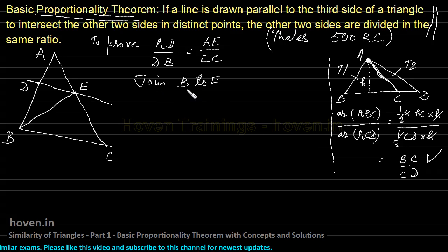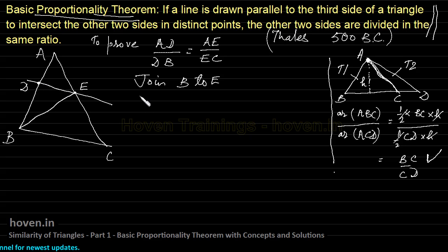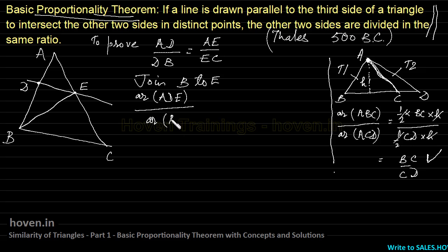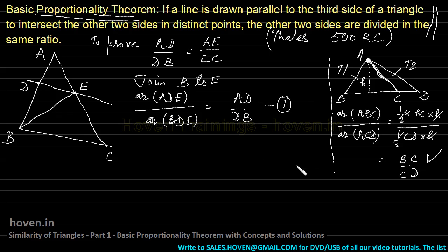Coming back to the proof: triangles ADE and BDE share a common edge DE. Therefore, the area of triangle ADE to the area of triangle BDE equals AD by DB. This is equation one.